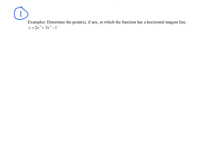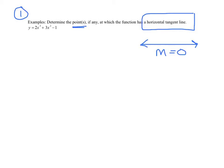Exercise one: determine the point or points — notice it may be plural — if any, at which this function has a horizontal tangent line. If you get stuck, draw a horizontal line and ask yourself what you know about the slope. Remember, this is calculus; we're thinking slope. It should be obvious the slope is zero. So find the slope and set it equal to zero.